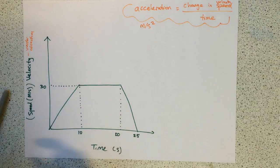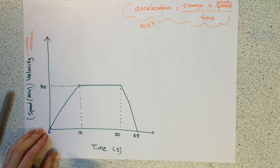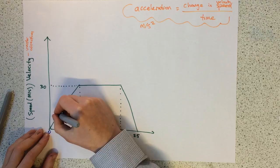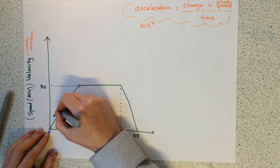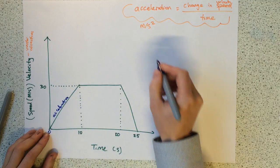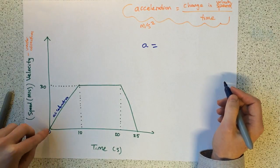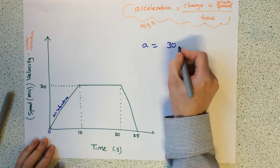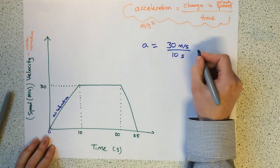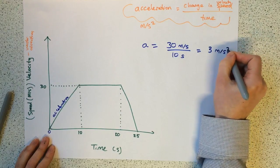Let's look at the first section. Between 0 and 10 seconds, the speed increases, it goes from 0 to 30. So this upward line means acceleration. Let's work out the acceleration in the first 10 seconds. Acceleration equals changing velocity, it goes from 0 to 30. The time taken, 0 to 10, is 10 seconds. So the acceleration is therefore 3 metres per second squared.